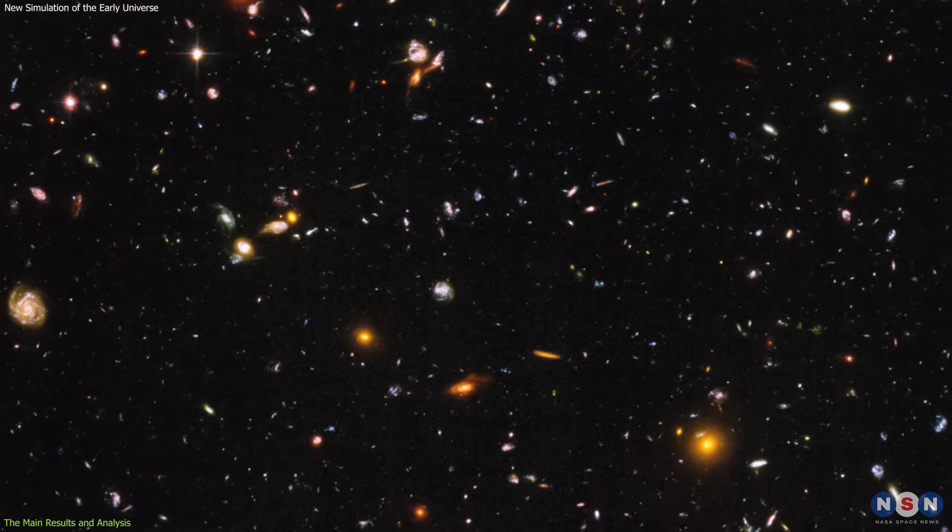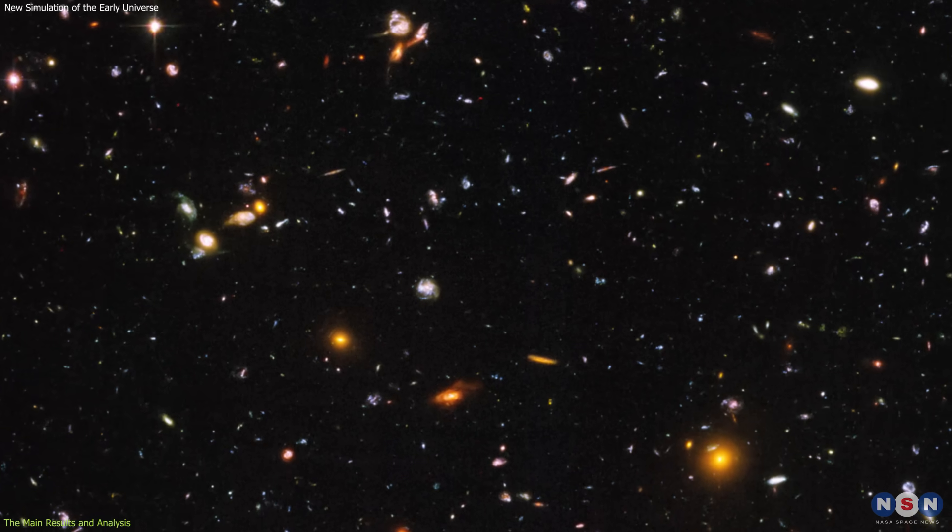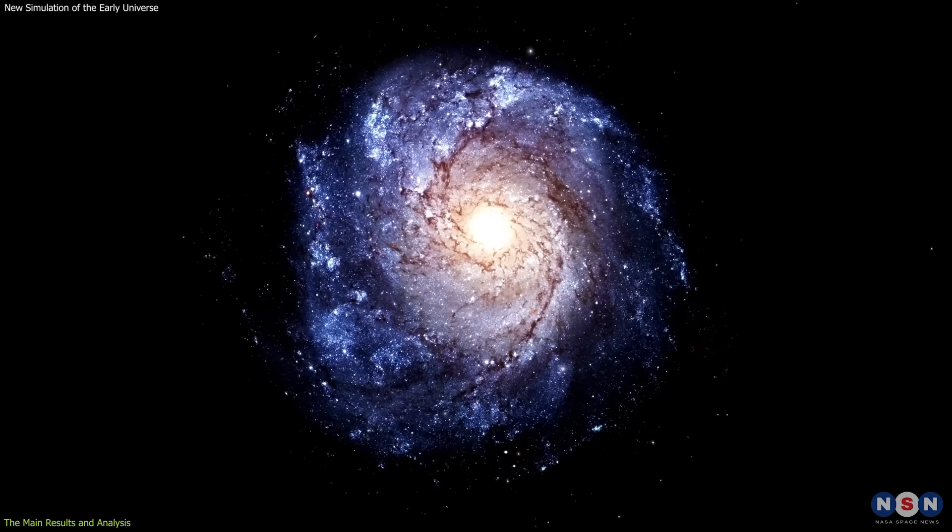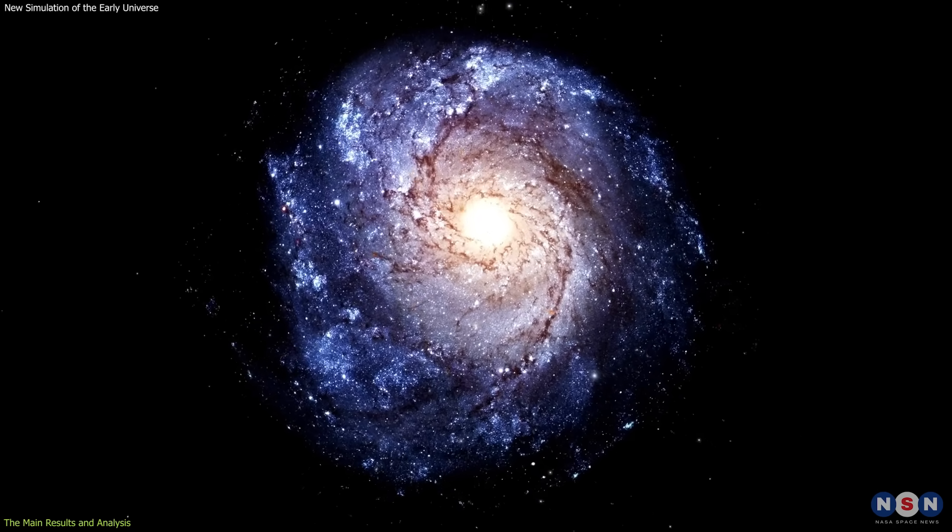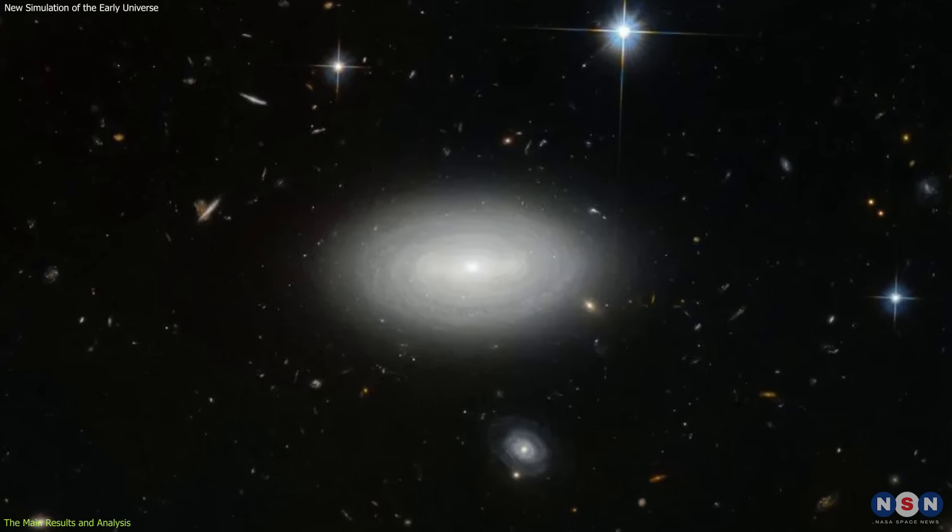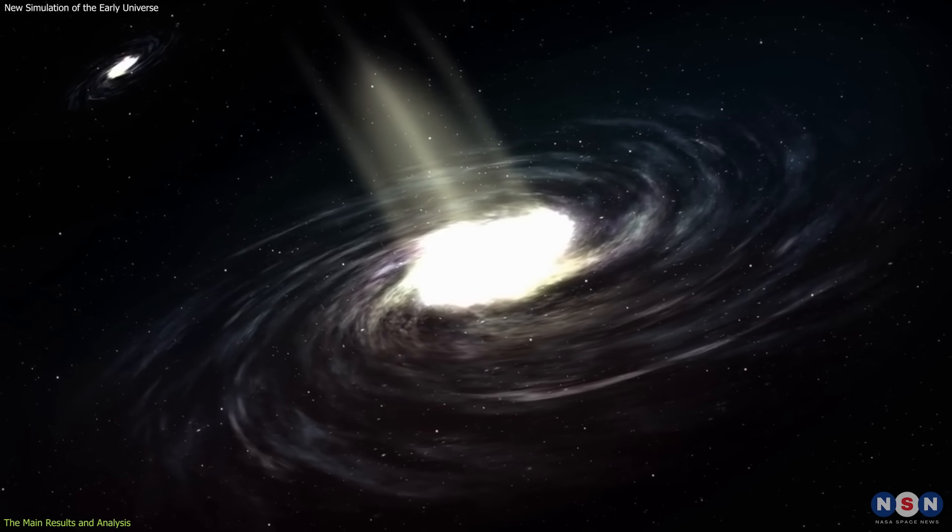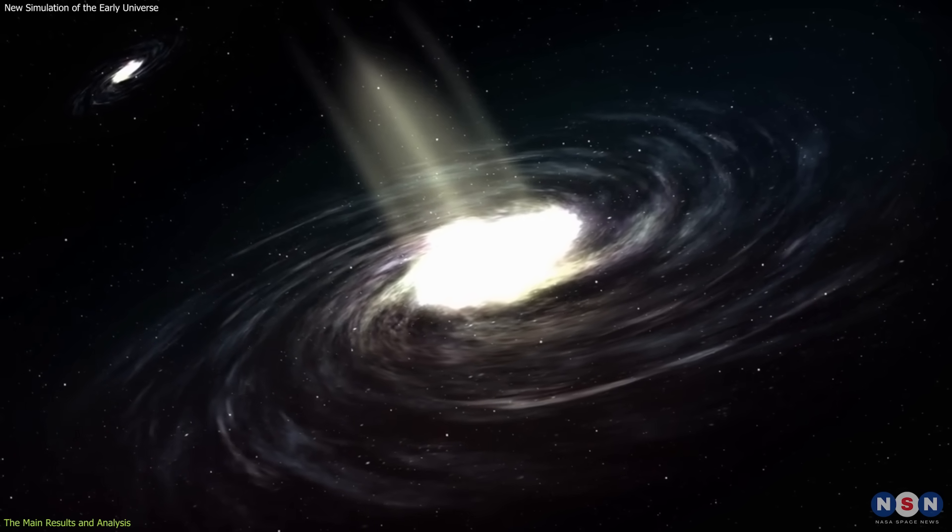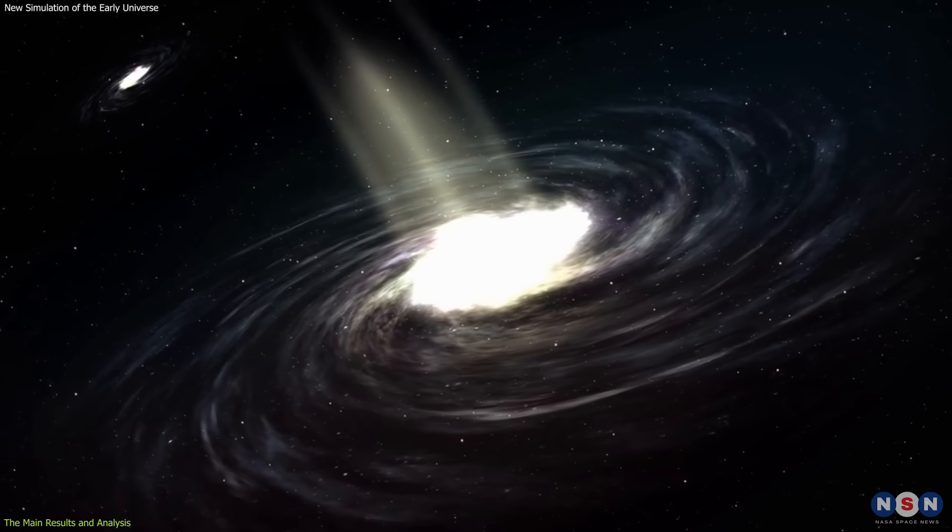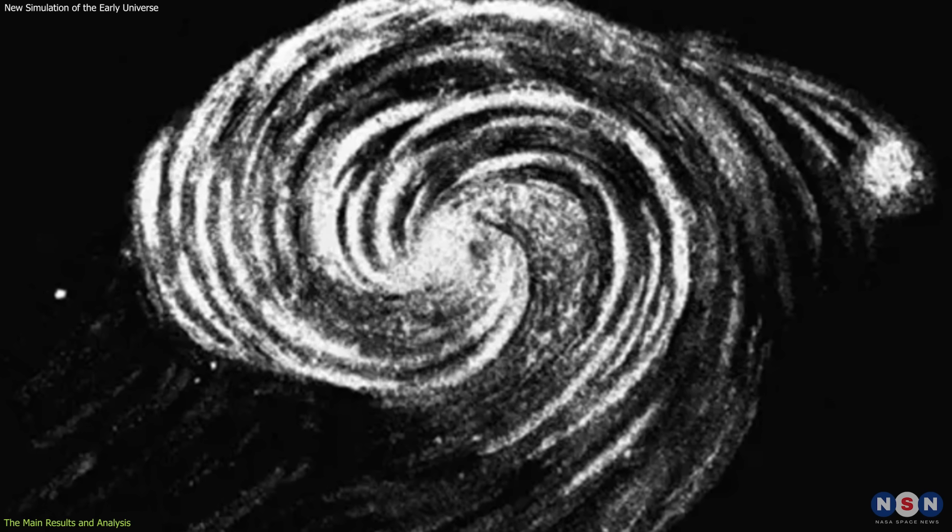Another interesting finding is that these first galaxies have diverse properties depending on their environment and history. For example, some galaxies are more isolated than others, meaning that they have fewer neighbors or interactions with other galaxies. These isolated galaxies tend to be smaller, less massive, less bright, less metal-rich, and less star-forming than non-isolated galaxies. They also tend to have more irregular shapes than non-isolated galaxies.